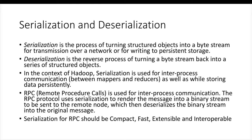For inter-process communication, remote procedure calls are used. The RPC protocol uses serialization to render the message into a binary stream to be sent to the remote node, which then deserializes the binary stream into the original message. For serialization for RPC, the serialization should be compact, fast, extensible, and interoperable. Interoperable means the serialization and deserialization process should work between multiple programming languages.